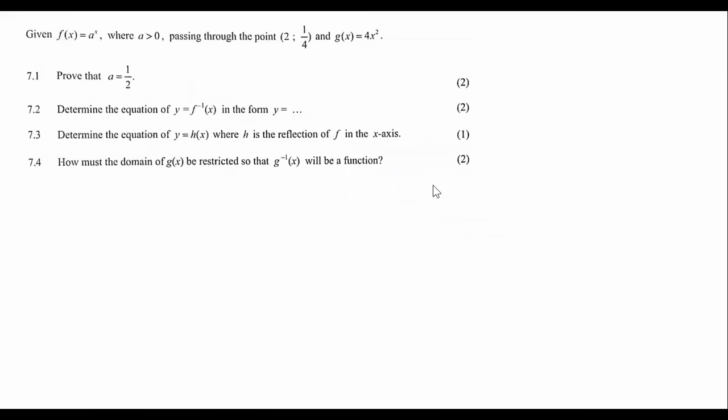Given that f of x is equal to a to the power of x, this is an exponential graph. Sometimes students get it confused with a parabola, where a is bigger than zero, passing through the point, and then g of x is this graph. Now, this is a parabola.